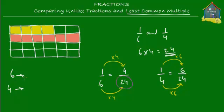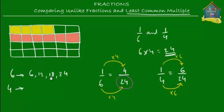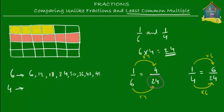To find multiples of 6 and 4, think of their multiplication tables. The multiples of 6 are: 6, 12, 18, 24, 30, 36, 42, 48, 54, 60, 66, and so on — multiplying 6 by 1, 2, 3, 4, and continuing. The multiples of 4 are: 4, 8, 12, 16, 20, 24, 28, 32, 36, and so on.